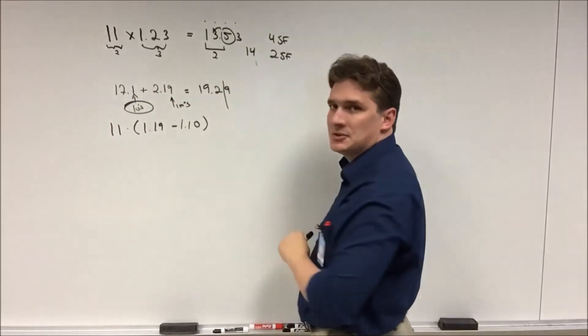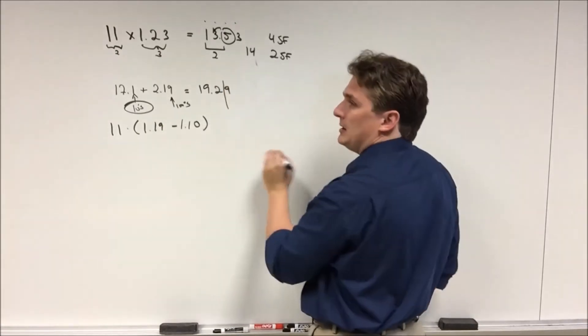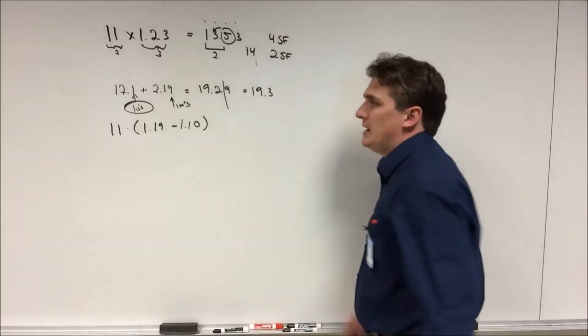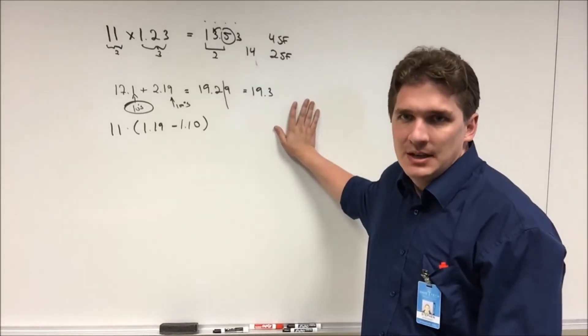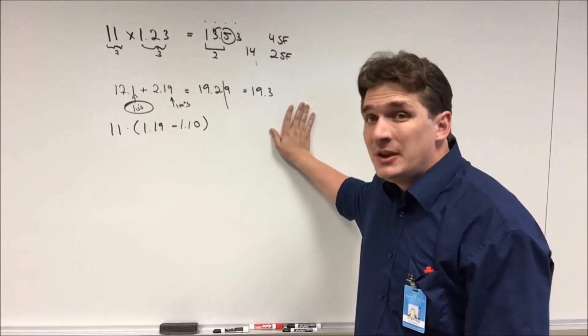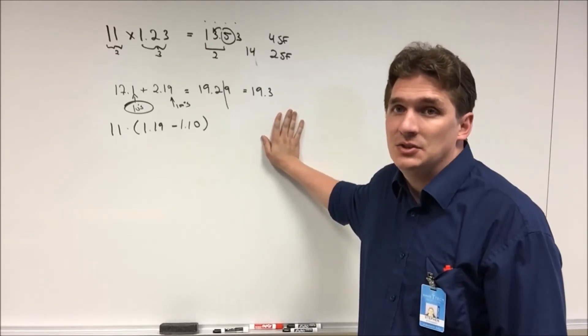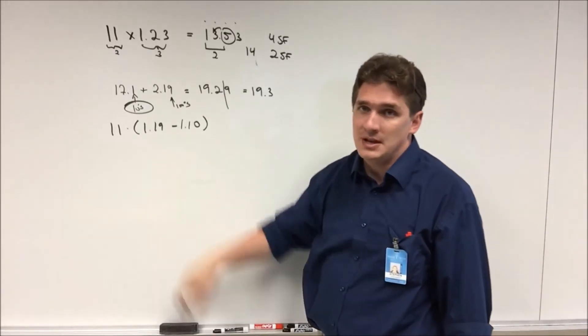So now we need to truncate our answer here. We have a 9 here on the right that's greater than or equal to 5, so this gives us a final answer of 19.3, which happens to be three sig figs. Now understand the number of sig figs you end up with from addition and subtraction may be completely different than the sig figs you have in each of your numbers. So we'll see that when we look at this case here.